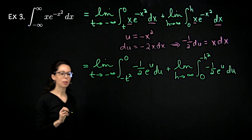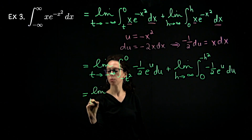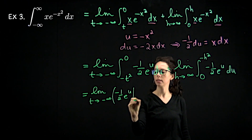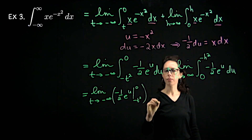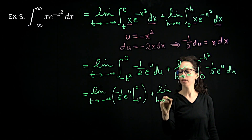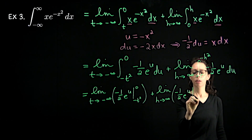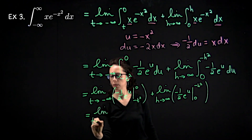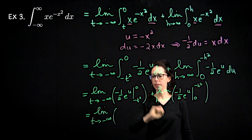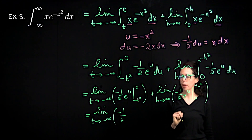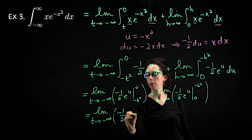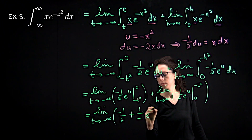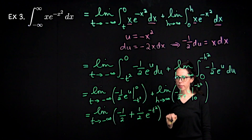Now we just need to antidifferentiate, plug in our bounds, and compute these limits. The antiderivative of e to the u is e to the u. So the first piece is the limit as t goes to negative infinity of negative one-half e to the u evaluated from negative t squared to zero: that gives negative one-half e to the zero, which is negative one-half, minus negative one-half e to the negative t squared, so plus one-half e to the negative t squared. The second piece is the limit as h goes to infinity of negative one-half e to the u evaluated from zero to negative h squared, giving negative one-half e to the negative h squared minus negative one-half.